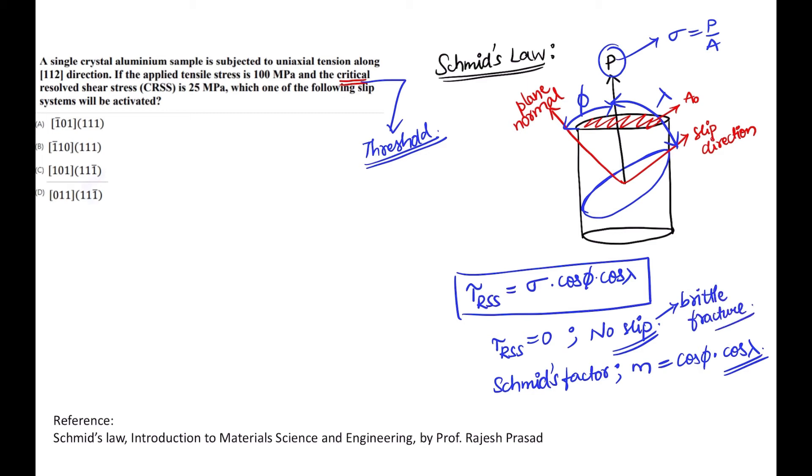What they are asking is the activation of slip system. That slip system will be activated which has highest value of m. Now what do you need to do? Just calculate m here. So here we know that the loading axis is given as 112, and the slip system itself is given, that's what you need to find out. Now we know that CRSS is given as 25 and applied stress is given as 100. So now carefully if you observe, we can write 25 is equal to 100 into m.